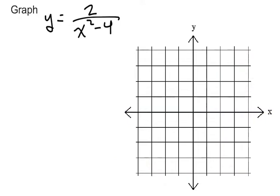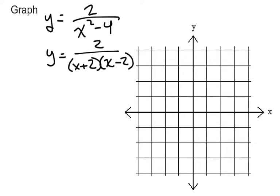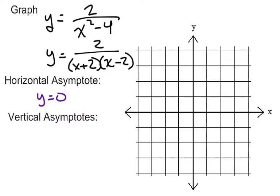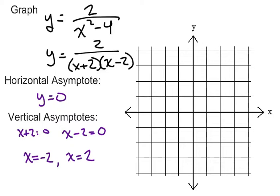In this next example, the denominator isn't factored. We need to factor the denominator in order to find the multiple vertical asymptotes. Once factored, we still have our horizontal asymptote at y equals 0, because the numerator is 2. The vertical asymptotes happen when the denominator equals 0 — that's when x plus 2 equals 0 and when x minus 2 equals 0 — giving us vertical asymptotes at x equals negative 2 and x equals positive 2.